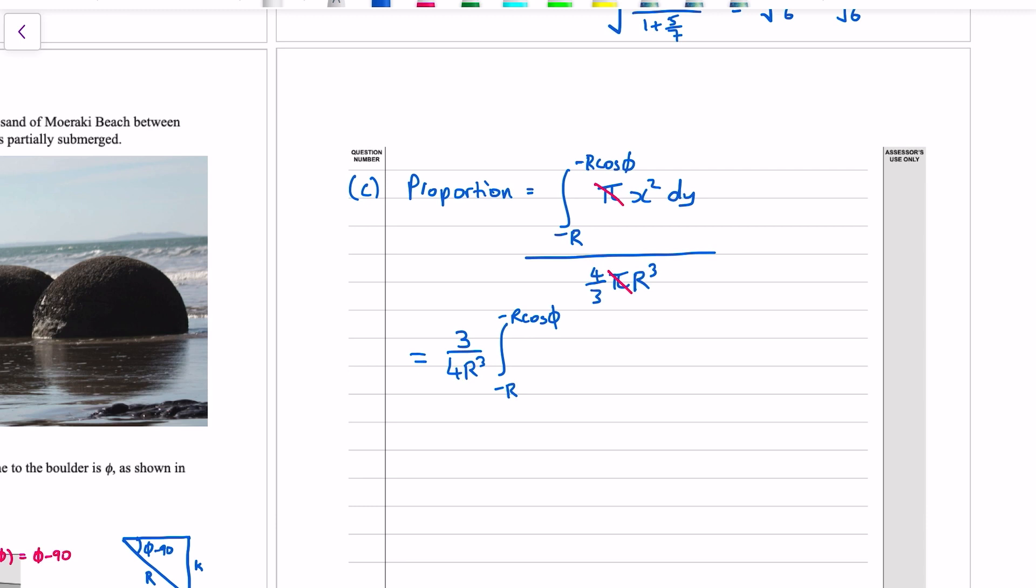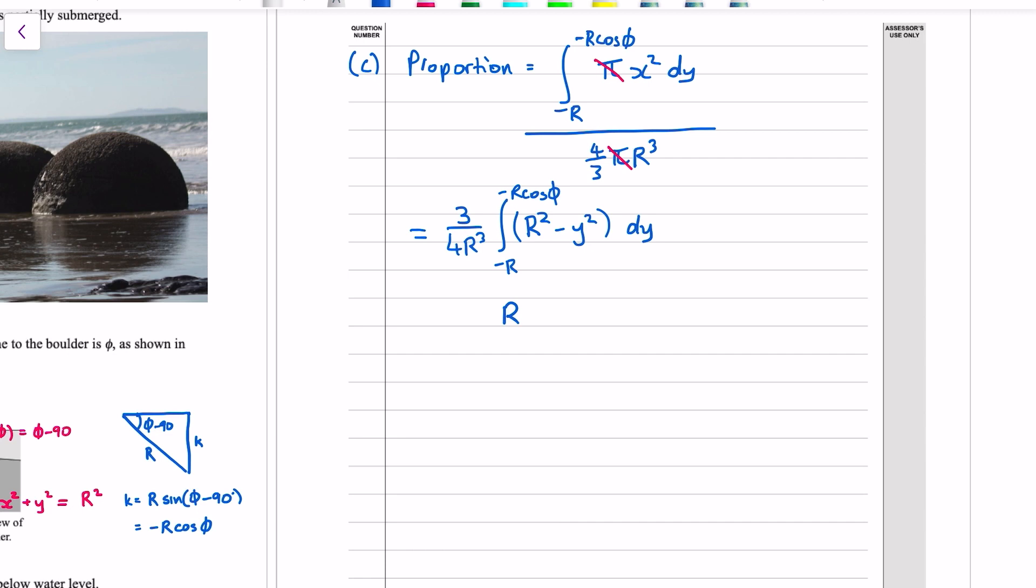Well, remember that the equation of the circle was x² + y² = R². So x² = R² - y². And we're integrating that with respect to y. So we've got [R²y - y³/3] between -R cos(φ) and -R.